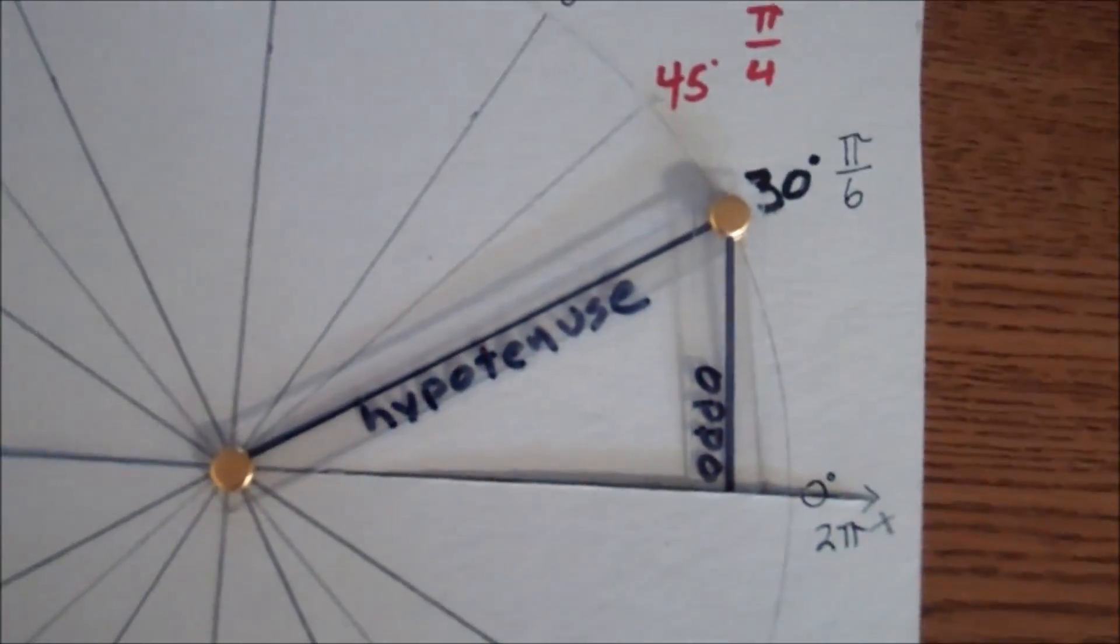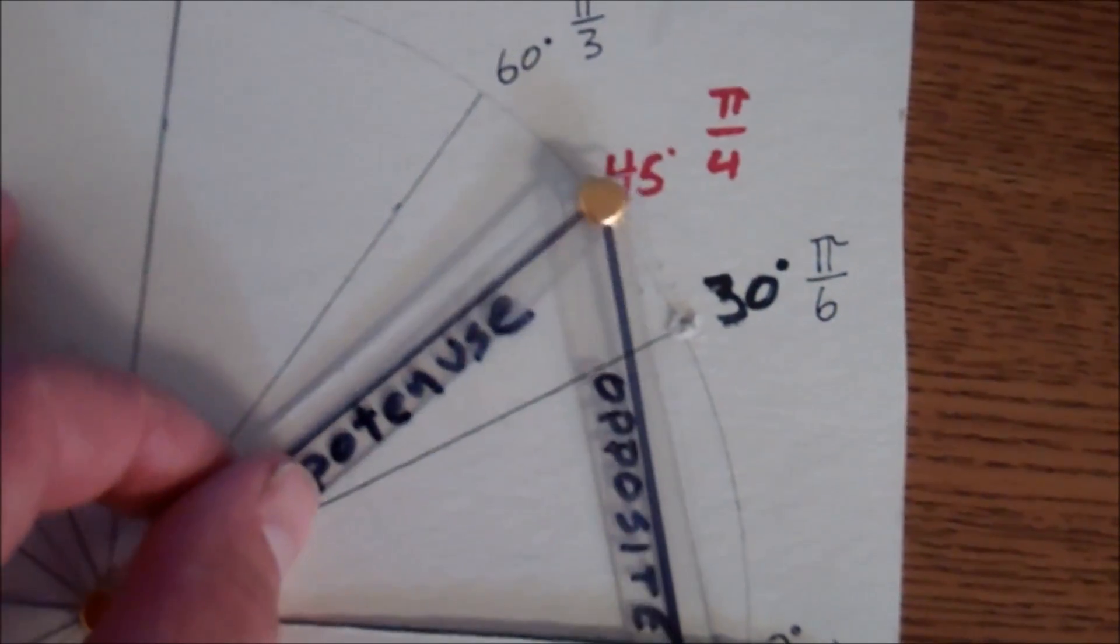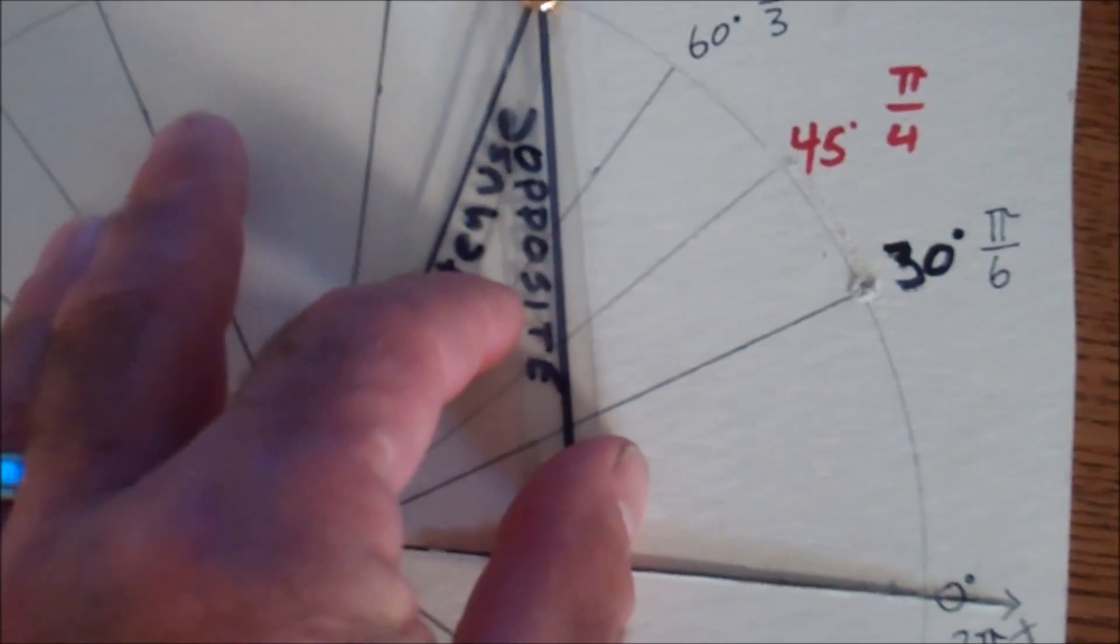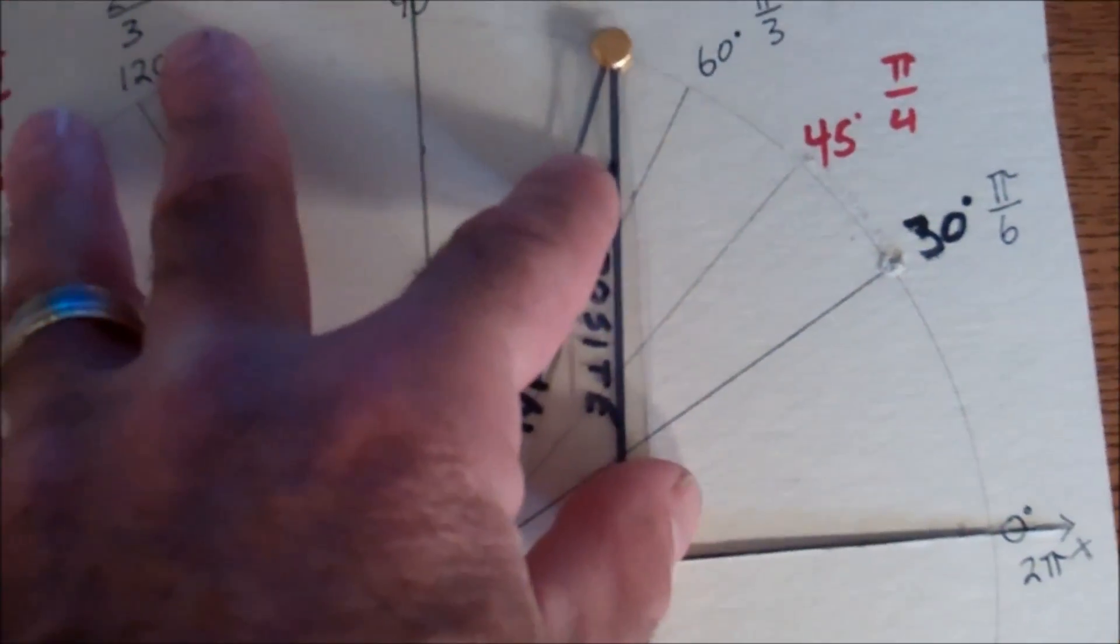There's my 30-60-90 with the hypotenuse and the opposite leg, and you can see as this rotates around, my opposite gets longer and longer, adjacent shorter and shorter. It's also really good to see your imaginary triangles.